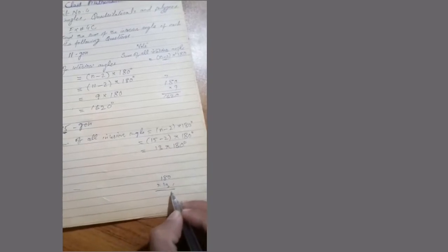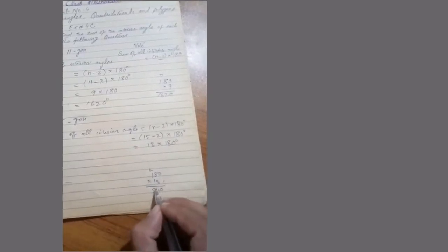Here N is 15, so we substitute: N = 15, (15 minus 2) multiplied by 180. 15 minus 2 equals 13, multiplied by 180. Calculating: 13 multiplied by 180 gives 2340. So the answer is 2340 degrees. Students, the remaining two questions you have to practice at home.